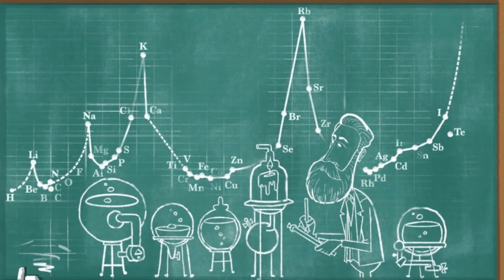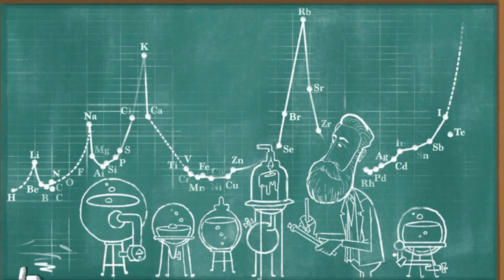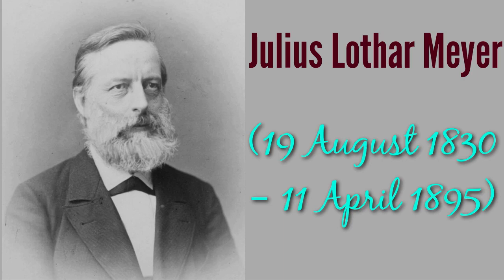Mayer's subsequent 1870 paper was groundbreaking in its own right, as its graphical demonstration of the relationship between atomic volume and atomic weight provided strong evidence for the periodic law describing cyclical patterns among the elements.